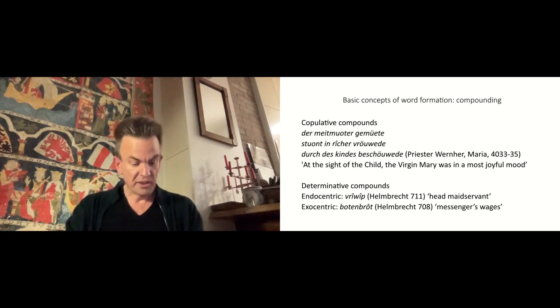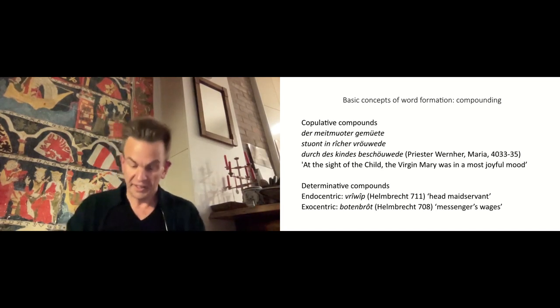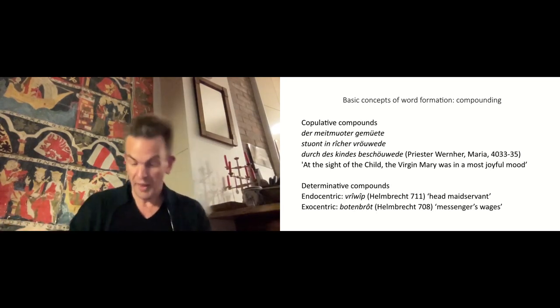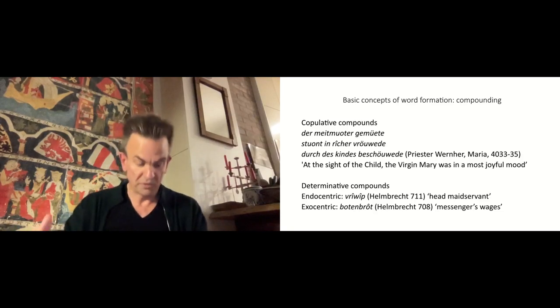So-called possessive compounds are types of exocentric determinative compounds and usually designate persons via their properties. The narrator of Helmbrecht uses terms like these to refer to certain robber barons like Wolfes-gaume, actually a person who has a wolf's throat, or Wolfes-drussel, actually someone who has a wolf's snout.